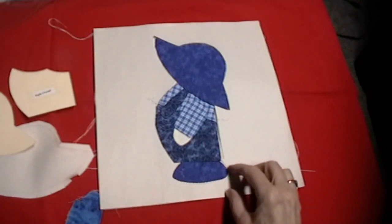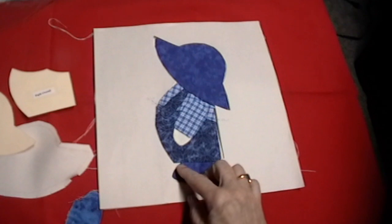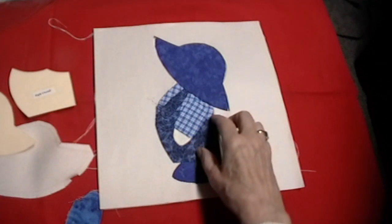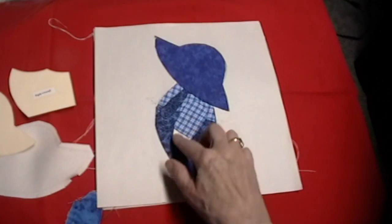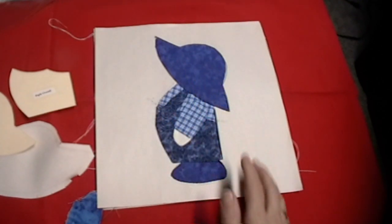The shoes are done. You would applique around the shoe. Then you would put on the shirt and you would applique around the shirt. The pants and applique around the pants. The hand, the sleeve, the strap, and the hat.